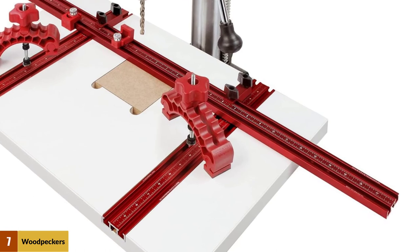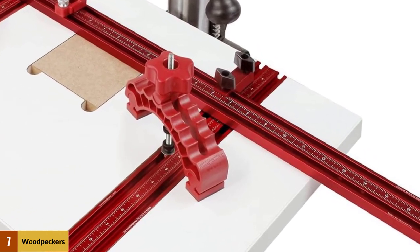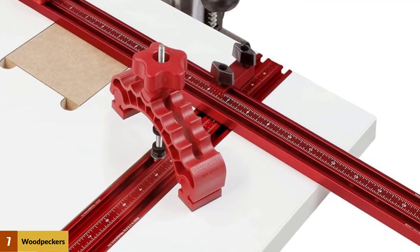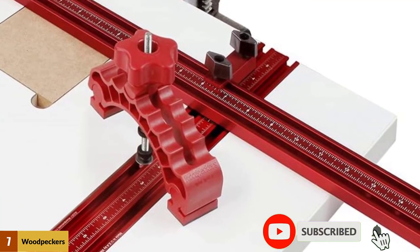It also comes with a pair of dual T-tracks, allowing you to use a variety of accessories. It comes with a pair of hull-down clamps, which make it easy to hold most projects in place while you work and reduces the amount of error due to slippage.